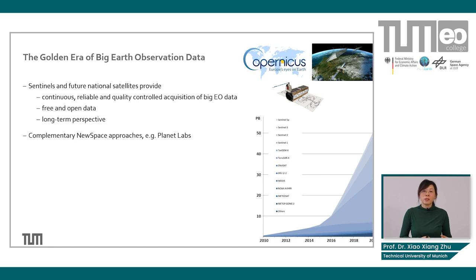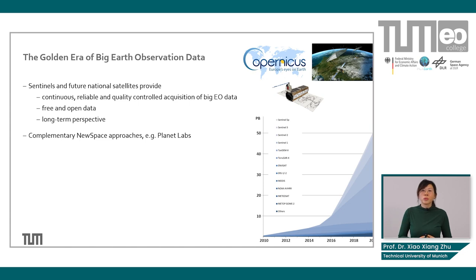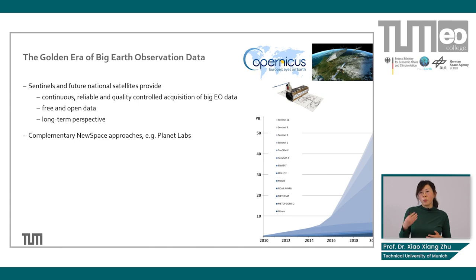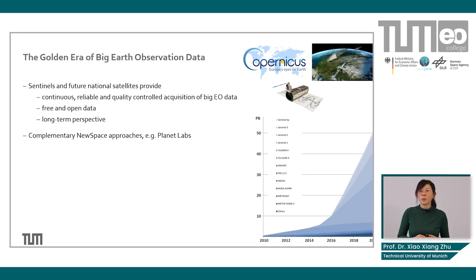From the commercial side, it is also a blooming period of new space. There are different companies like Planet Labs, IceEye, Capella Space, and others. Taking Planet Labs as an example, they are launching hundreds of small cubic satellites with a typical size of 20 centimetres. They orbit the Earth with very high temporal frequency and can offer, even though not the highest quality, basically daily coverage of the Earth. These are complementary to the approaches operated by the space agencies.